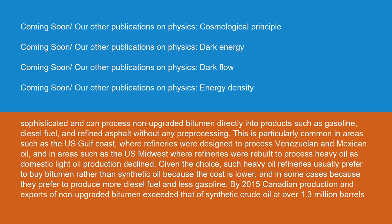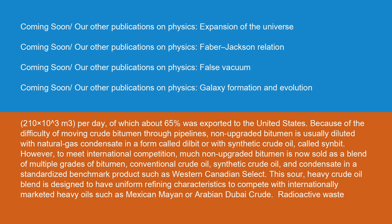Given the choice, heavy oil refineries usually prefer to buy bitumen rather than synthetic oil because the cost is lower, and in some cases because they prefer to produce more diesel fuel and less gasoline. By 2015, Canadian production and exports of non-upgraded bitumen exceeded that of synthetic crude oil at over 1.3 million barrels (210,000 m³) per day. Non-upgraded bitumen is usually diluted with natural gas condensate — known as Dilbit — or with synthetic crude oil, called Synbit. Much non-upgraded bitumen is now sold as a blend in a standardized benchmark product such as Western Canadian Select — a sour, heavy crude oil blend designed to compete with internationally marketed heavy oils such as Mexican Mayan or Arabian Dubai crude.